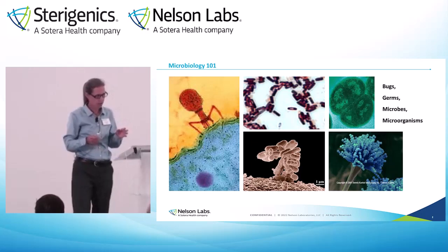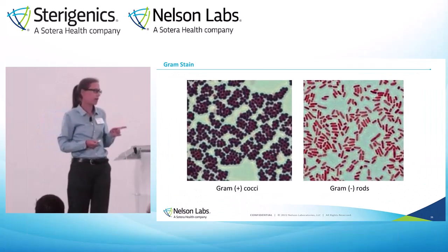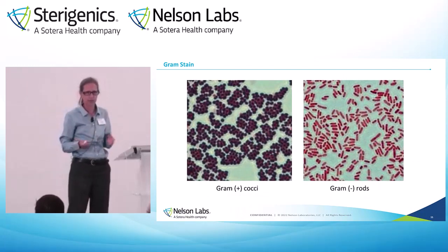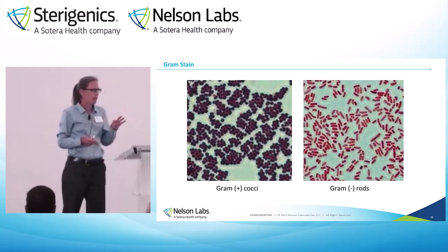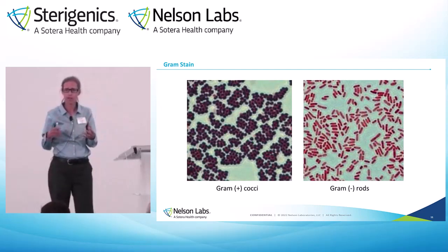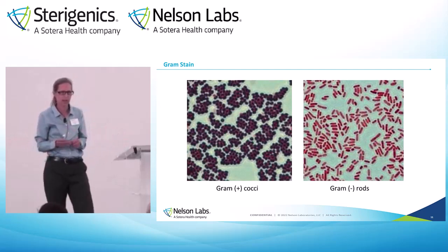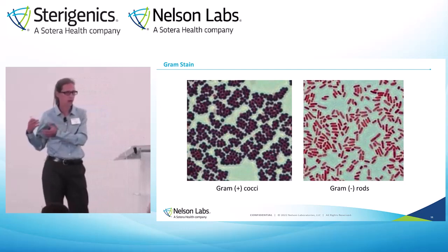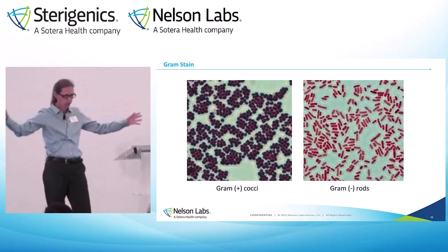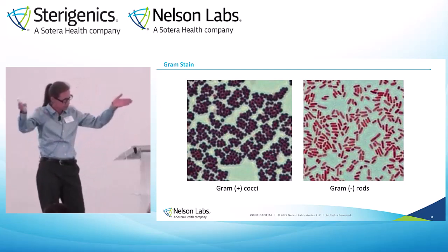Knowing what is on the product then becomes very important. How we figure out what those organisms are is through a series of tests. The first one will be the gram stain. A man with the last name of Gram invented this four-step staining process. And based on the difference in the cell wall of organisms, they either come out purple or pink at the end. So we call the purple ones gram-positive and the pink ones gram-negative. If we're trying to figure out what organisms we have, we've now taken the population and divided them into two groups — we haven't gotten very specific, but we're starting to narrow things down.